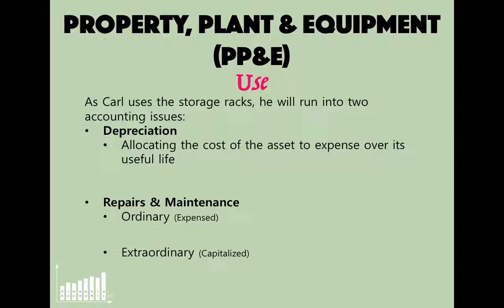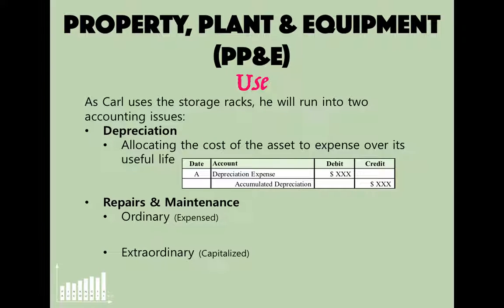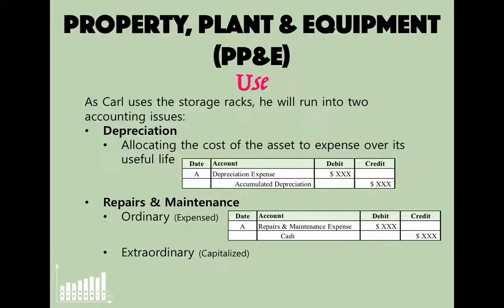As we use long-term assets, we run into two accounting issues: depreciation and repairs and maintenance. Depreciation is allocating the cost of the asset to expense over its useful life; the entry is a debit to Depreciation Expense and a credit to Accumulated Depreciation. For repairs and maintenance, ordinary repairs are simply expensed — for example, plugging a flat tire on a car — with a debit to Repairs and Maintenance Expense and a credit to Cash.